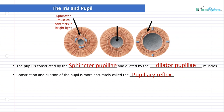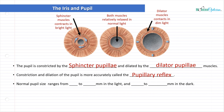When the pupil constricts, the sphincter muscles contract — this happens in bright light. As soon as you enter a bright room, these muscles contract, making the pupil opening smaller. In normal ambient light, both muscles tend to be pretty relaxed. However, in dark or dim conditions, the dilator muscle kicks in and contracts so that the pupil opening gets larger. Normal pupil size ranges from two to four millimeters in the light and about four to nine millimeters in the dark, so there's some variance depending on lighting conditions.